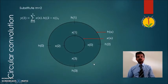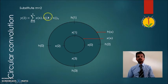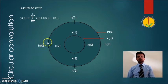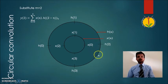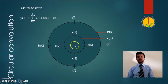When we substitute m equal to 2, h of n is delayed by two samples, so h of 0 has been shifted by two samples from its origin. Following the same steps of multiplication and addition gives us another sample of the convolution.